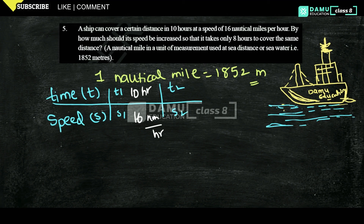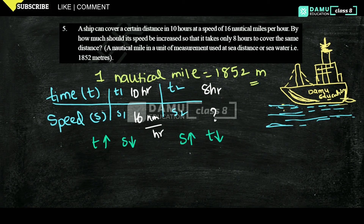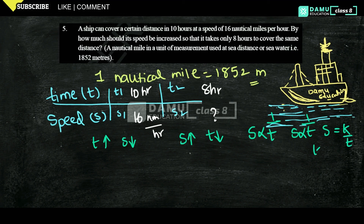How much should its speed increase to cover the same distance in 8 hours? The relation we need to know is: if time increases, speed decreases, and if speed increases, time decreases. So speed and time have an inverse relation — speed is inversely proportional to time, that is S = K / T, so K = S × T. We write the formula as S1 × T1 = S2 × T2.